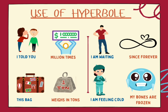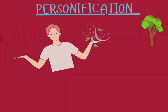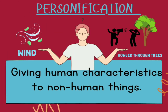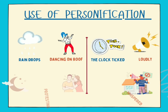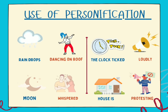Next is personification. Personification is giving human characteristics to non-human things. For example: The wind howled through the trees. The raindrops danced on the roof. The moon whispered secrets to the stars. The clock ticked loudly on the wall. The house cracked in protest as the wind blew.